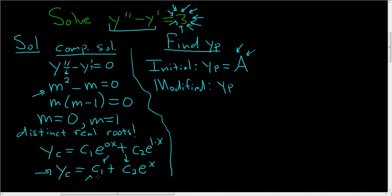Well, there is right here. This guy, c sub 1. That's a constant. A is a constant, so we have to multiply y sub p by x. Right? We want to make these linearly independent.